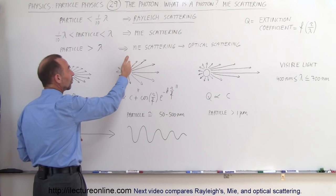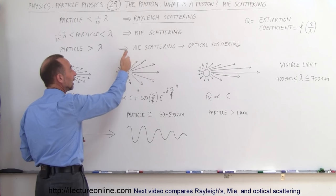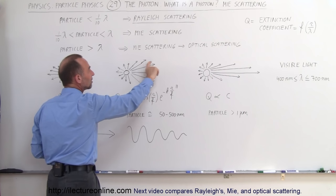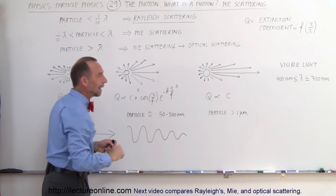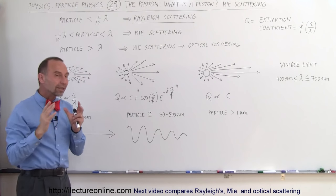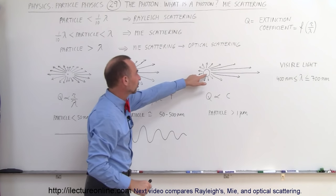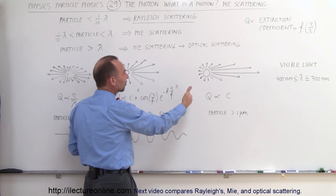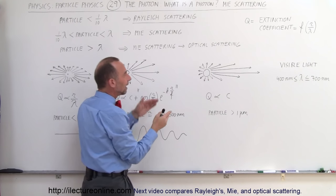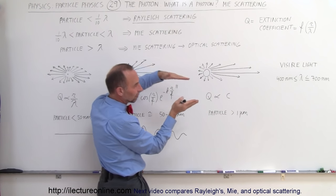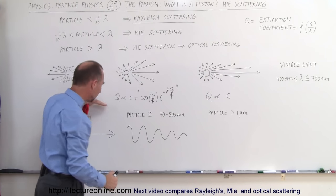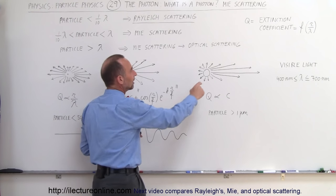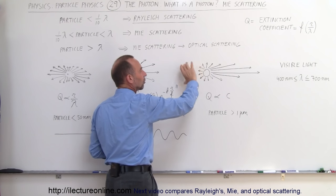You can see that there's some scattering in the upward, backward, and downward direction, but the predominant scattering in Mie scattering is in the forward direction. As the particle gets bigger — about the size of a wavelength or bigger — more of the scattering direction is forward, in the same direction as the approaching photon, and you can see that very little of the scattering goes backward.